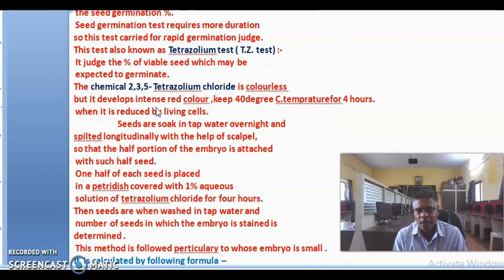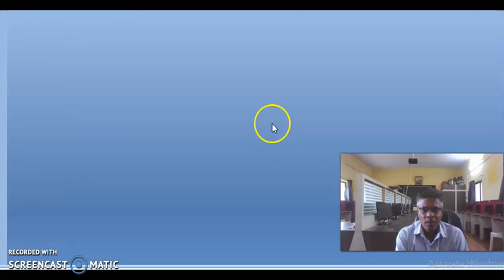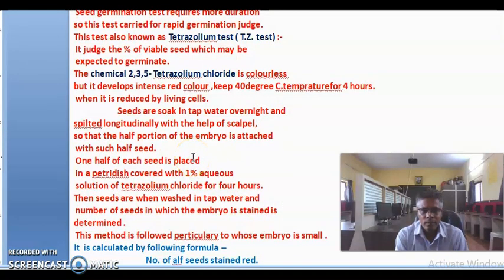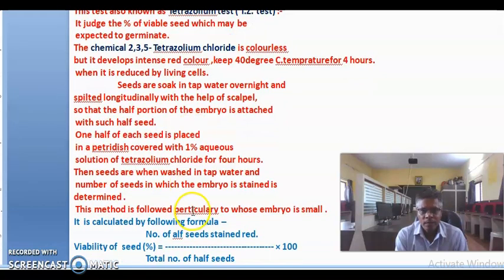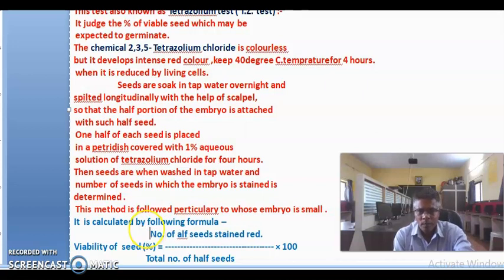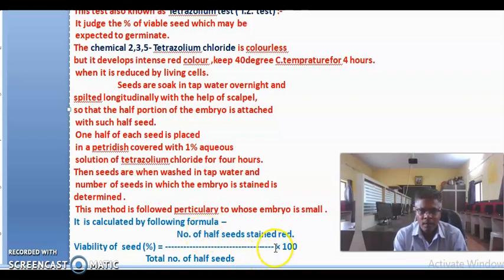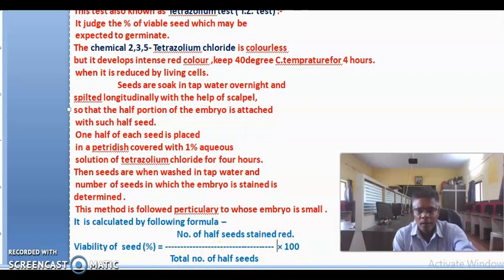The seed viability percentage is also counted or calculated by the use of following formula. The viability of seed is expressed in percentage. Number of half stained seeds red color divided by total number of half seeds used for testing, and it is multiplied by 100. This formula is used for seed viability percentage or germination percentage, which should be calculated within a short time.